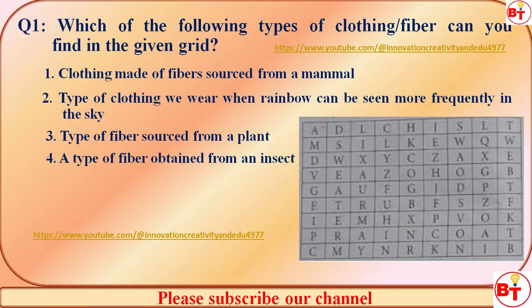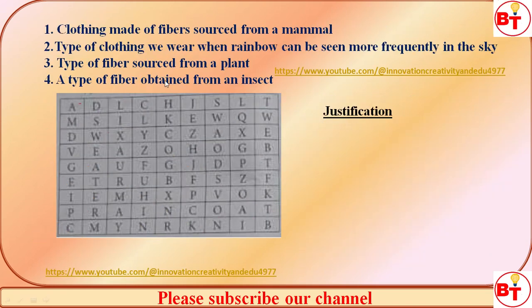The question is: which of the following types of clothing or fiber can you find in the given grid? Here is the grid. In this grid you have to find the answers to these four questions which are available. The first question is: clothing made of fiber sourced from a mammal.